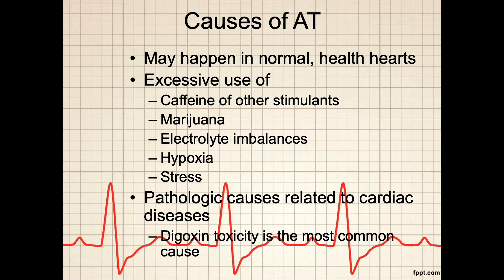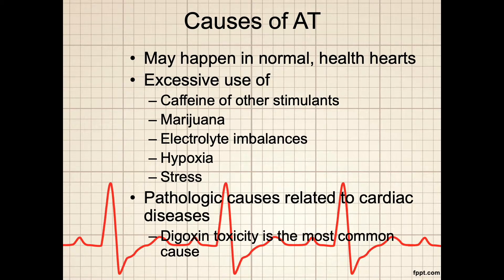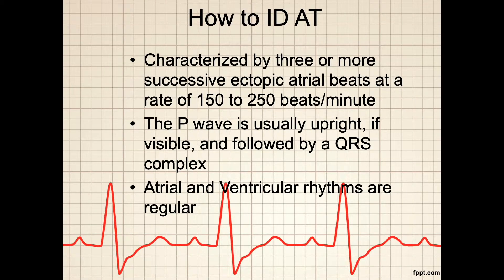Digoxin toxicity is the most common cause of atrial tachycardia. It is important for the nurse to determine if the atrial tachycardia is benign or an ominous sign. This rhythm may be a forerunner of a more serious ventricular arrhythmia, especially if it occurs in a patient with an underlying heart condition. The increased ventricular rate of atrial tachycardia results in a decrease in time allowed for the ventricle to fill, an increase in myocardial oxygen consumption, and a decrease in oxygen supply. Angina, heart failure, ischemic myocardial changes, and even a myocardial infarction can occur as a result. It is important that you properly identify atrial tachycardia, which is characterized by three or more successive ectopic atrial beats at a rate of 150 to 250 beats per minute.